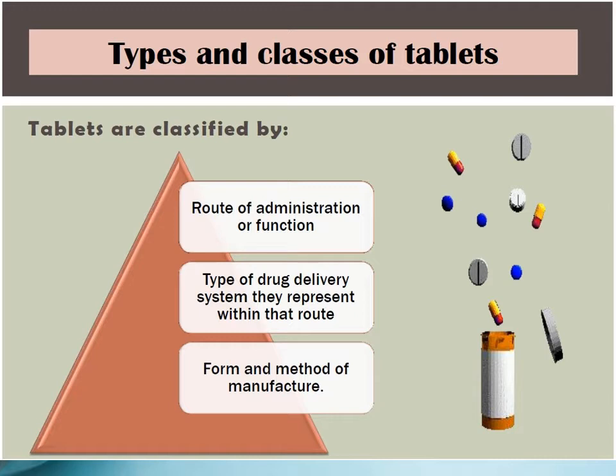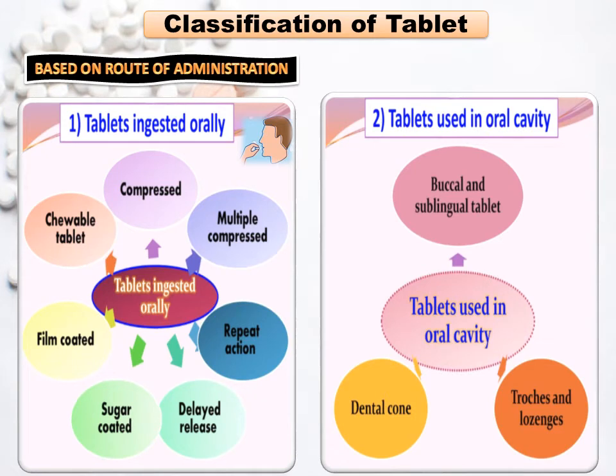You can classify your tablet by: first, route of administration; next, type of drug delivery; and next, form and method of manufacture. These are the three classifications of tablets.